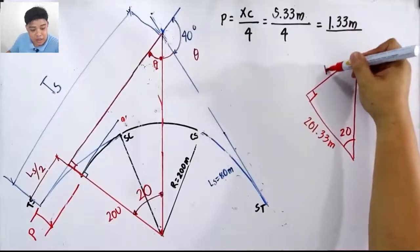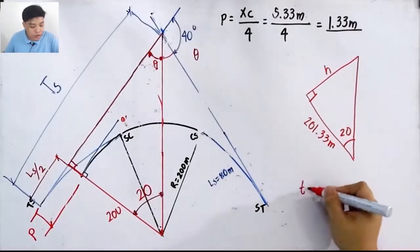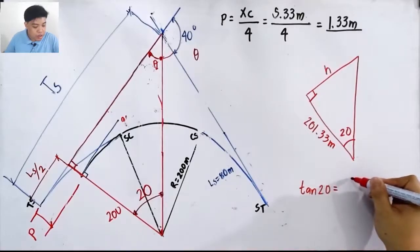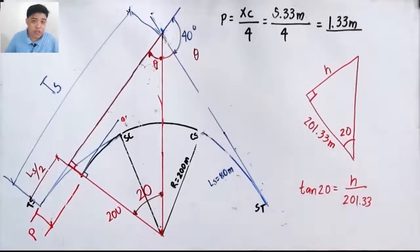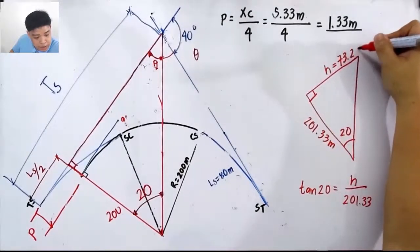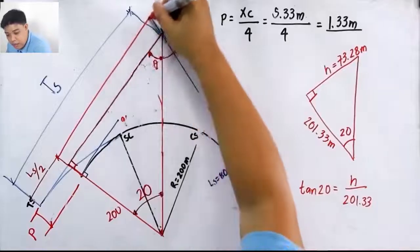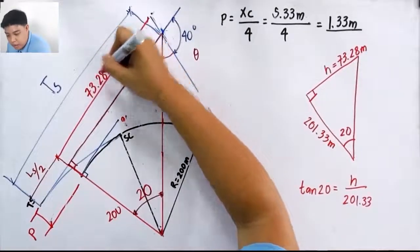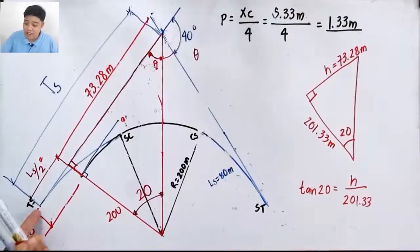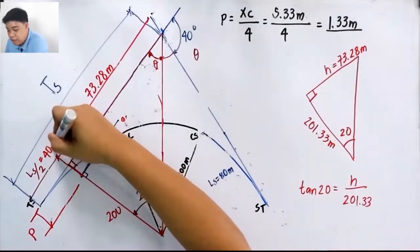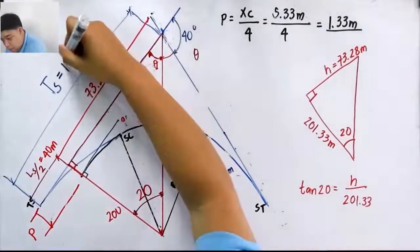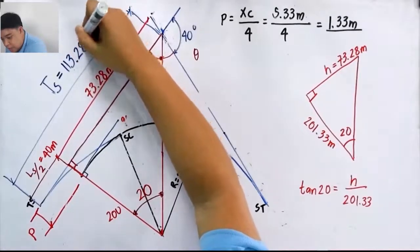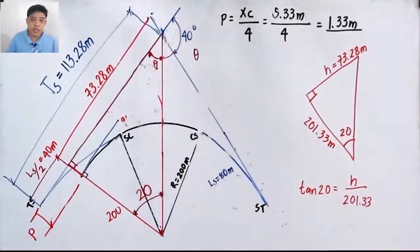Calling this length h, by trigonometry: tan 20° = h / 201.33, so h = 201.33 × tan 20° = 73.28 meters. Since the other component of Ts is half the length of the spiral from TS to SC, that is Ls/2 = 40 meters. Adding them together: Ts = 73.28 + 40 = 113.28 meters.